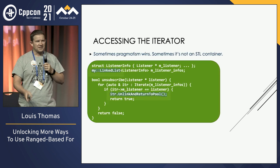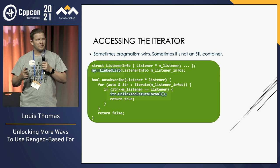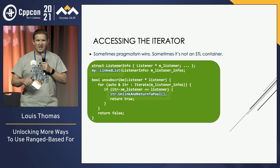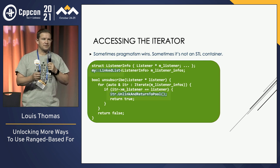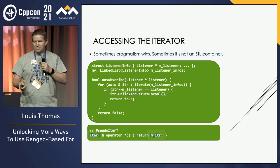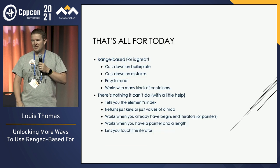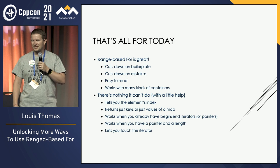So what if you need to access the iterator? I had a case where I had a very specially written linked list class, and it would behave really well with iteration, except I needed to get to the iterator so I could delete the element. We do the same thing, except when we return the pseudo iterator, we return the iterator itself, and that works. So now range-based for can do all these things we want it to do — it's even better.